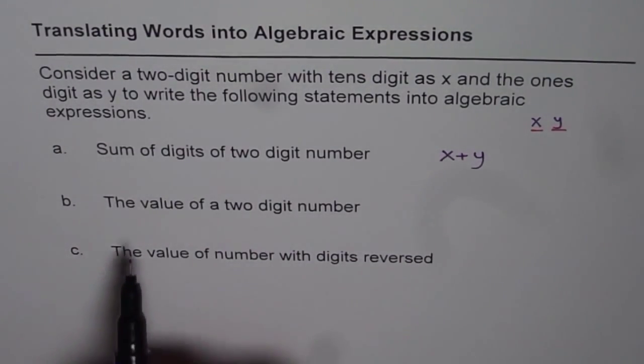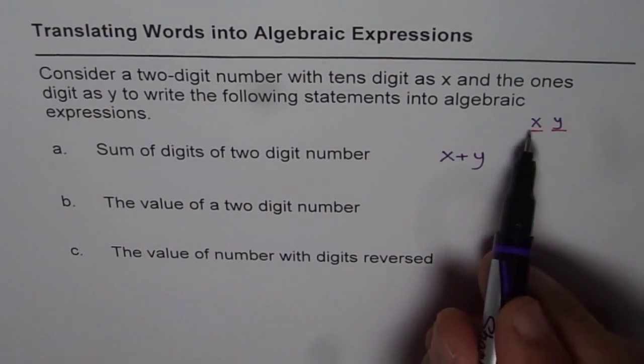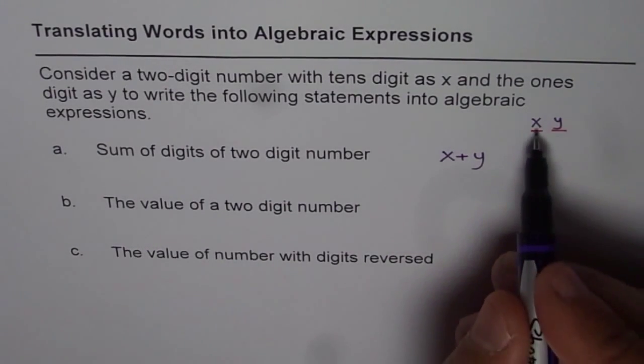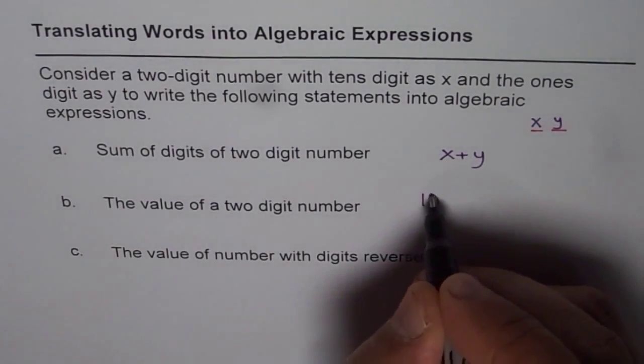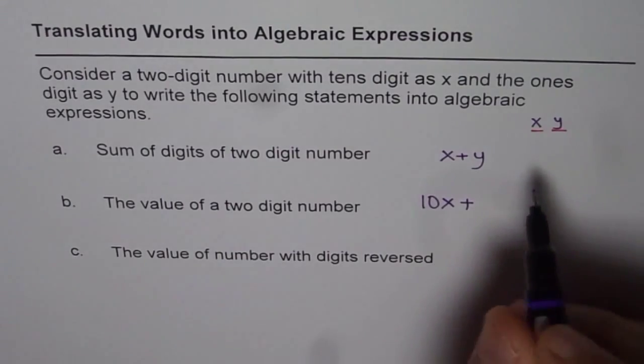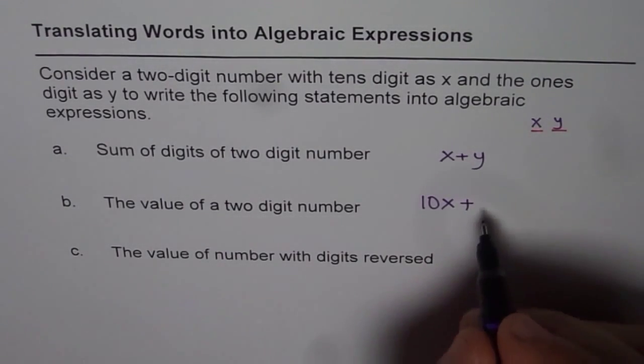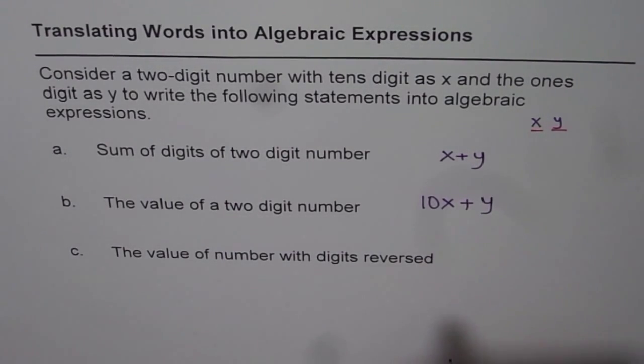Part B is the value of two-digit number. What is the value of this number? x is in tens place, so it gets multiplied by 10, so we get 10x plus y is in ones place, it gets multiplied by one. So 10x plus y is the value of this number.